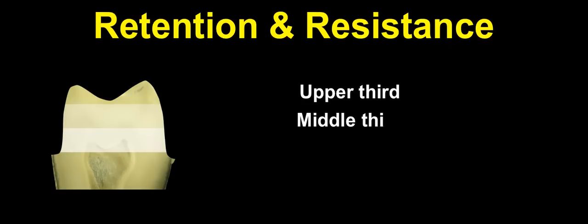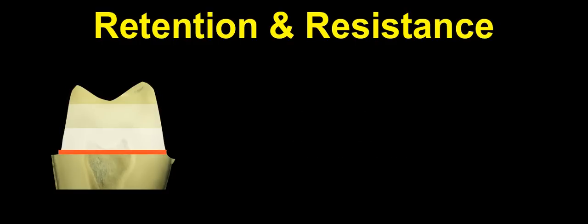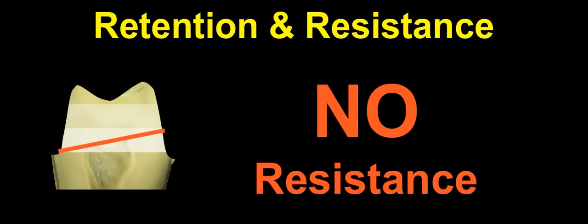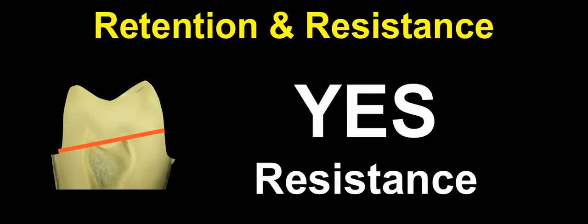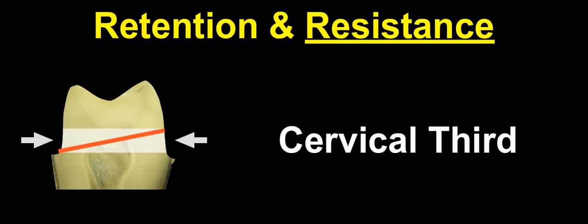Which third of our preparation is most important — the upper, the middle, or the cervical third? If we have a tapered preparation, we have no resistance because the crown is very easy to dislodge. On the other hand, if we have parallel walls, especially in the cervical part, we do have a resistance form. This has been shown by various publications to be very, very useful. In order to have resistance form, the cervical third of our preparation seems to be the most important one.